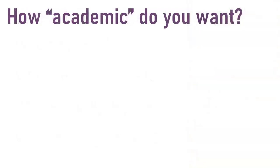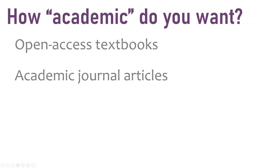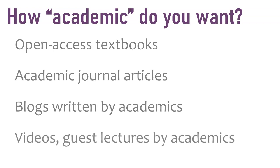Another question: how academic do you want it? Academia is historically based in white supremacy — lots of norms entrenched in racism designed to keep specific people out. So do we want to reinforce that, or open the door beyond dense textbooks? You can pull from open-access textbooks, Creative Commons-licensed materials, academic journal articles, academic blogs, tweet threads by academics, and queer folks talking about being queer. Academics are also often happy to do guest or Zoom lectures.